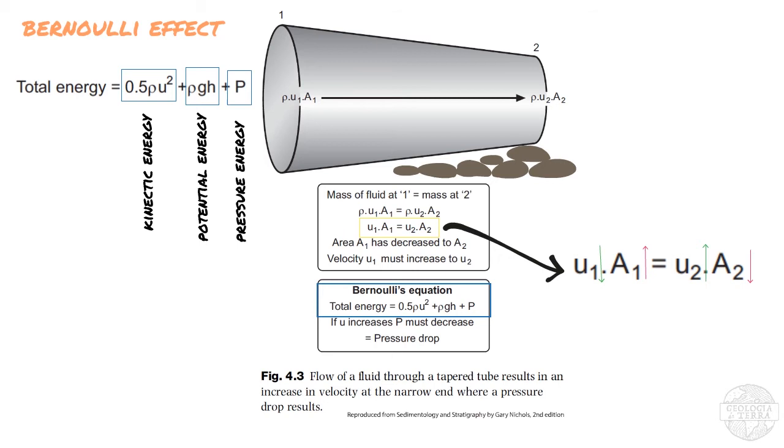So here this total energy has to be conserved in the flow from one to two, and remember we are assuming no energy loss due to frictional effects. So here the potential energy is constant because the difference in level H at one and two is considered to be very small in this case.